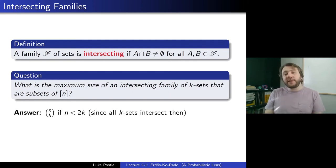Here's the first point: if n is small, so if n is less than 2k, the answer is n choose k. It's all of the k sets. If n is smaller than 2k, then every 2k sets actually intersect, so we could take all of them. That's kind of the trivial answer when n is small. The interesting question is what happens if n is large, so if n is at least 2k. What is the answer?